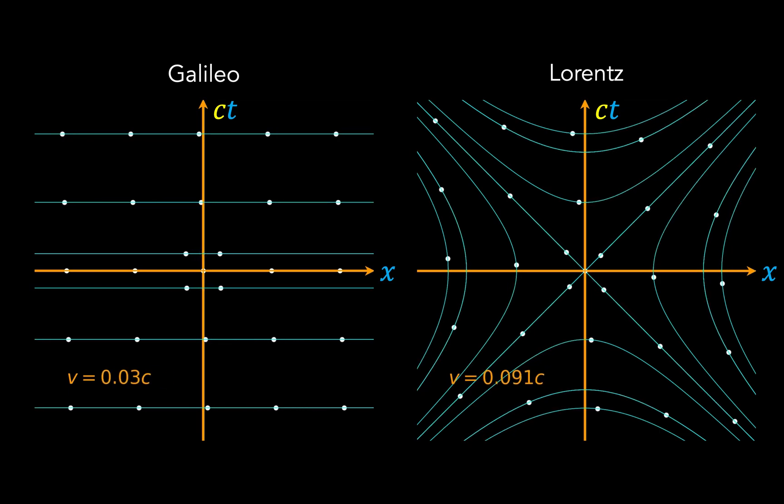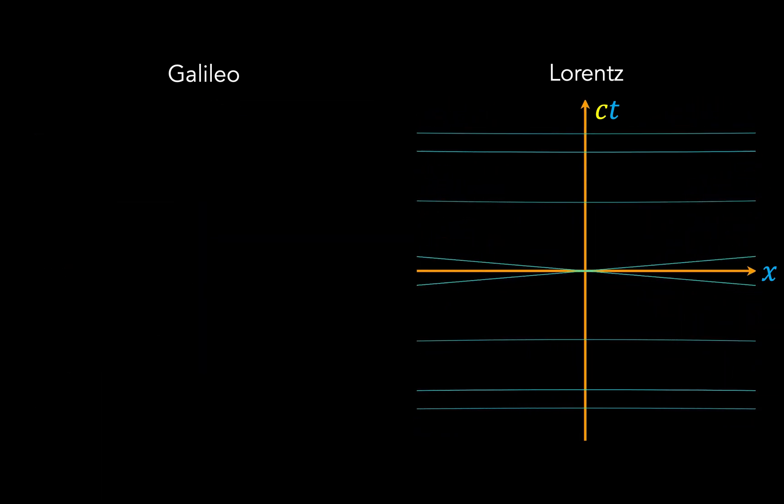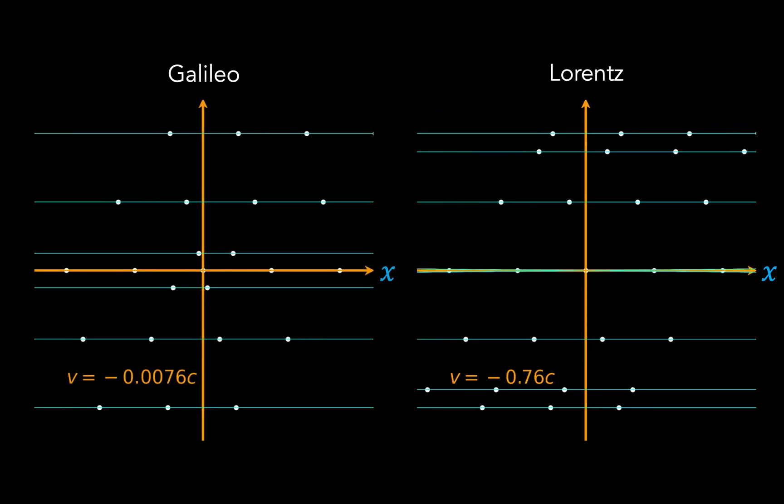Now, despite all this, these diagrams also reveal why Newtonian physics is actually a good approximation for low velocities, for if we stretch the Lorentz diagram such that it captures only small velocities, then it does look very similar to the Galileo diagram.